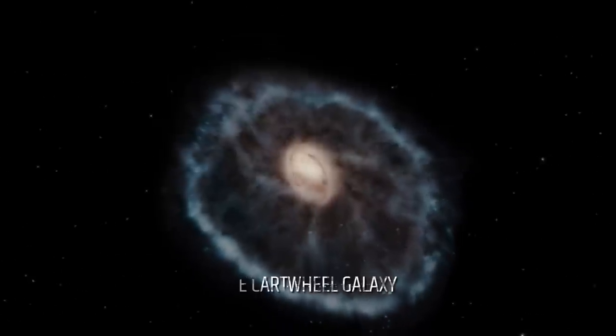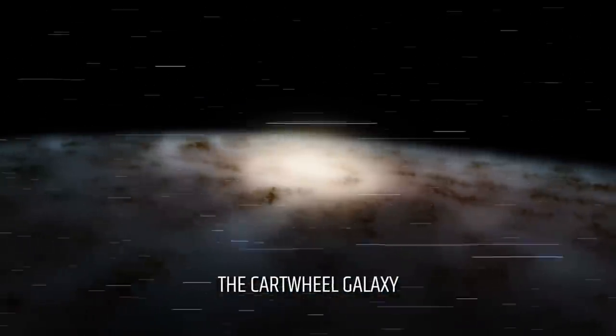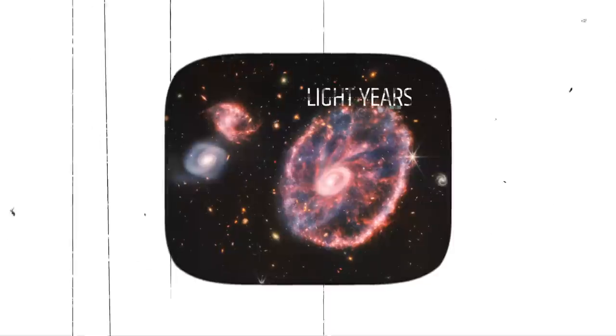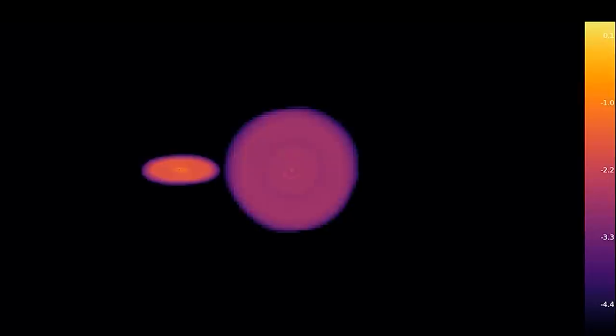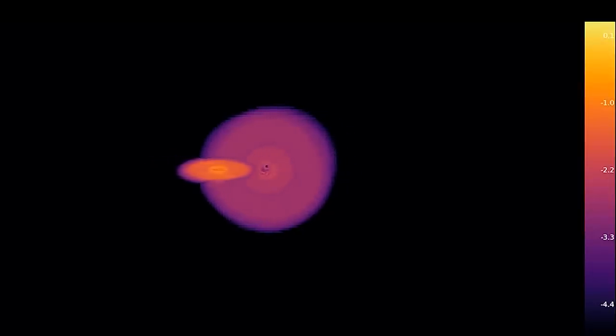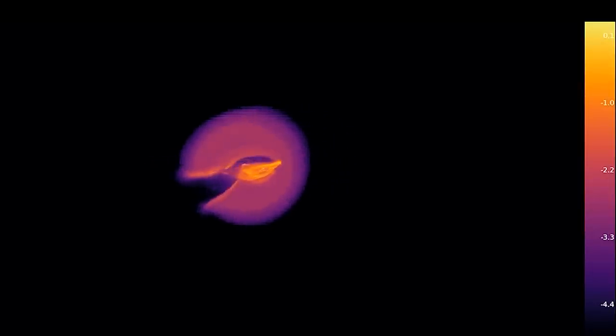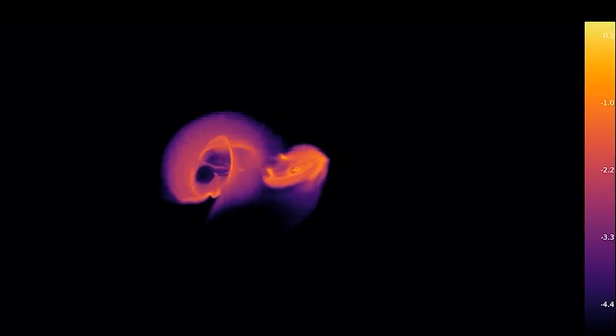The Cartwheel Galaxy is a ring-shaped galaxy located approximately 500 million light years away in the constellation Sculptor. The ring shape of the galaxy is thought to have been caused by a collision with a smaller galaxy that occurred approximately 100 million years ago.